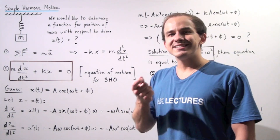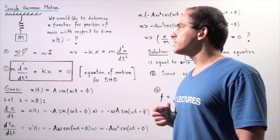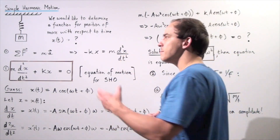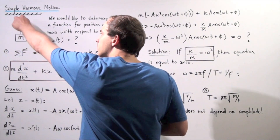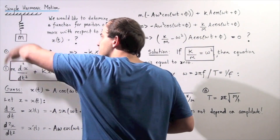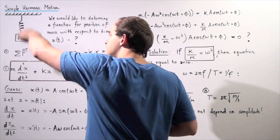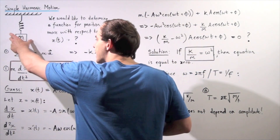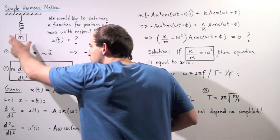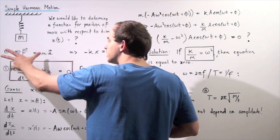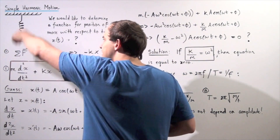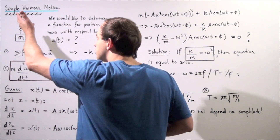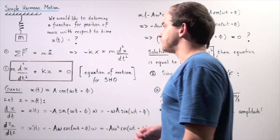One example of an object undergoing simple harmonic motion is a mass hanging from a spring that is oscillating back and forth. If we take the mass, pull it down, and let go, it will continue oscillating under simple harmonic motion.